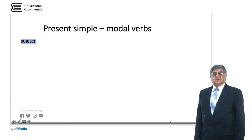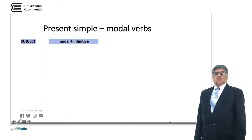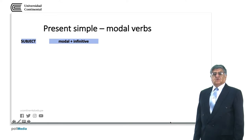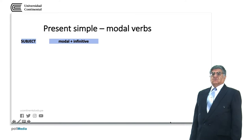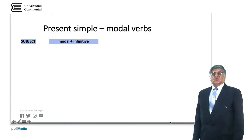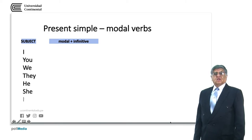Now we have modal verbs. The structure is: subject + modal + infinitive. Remember that modals are followed by infinitives — also called the simple form. Modal verbs include: can, may, must, ought to, might — and also will, would, shall, and should.